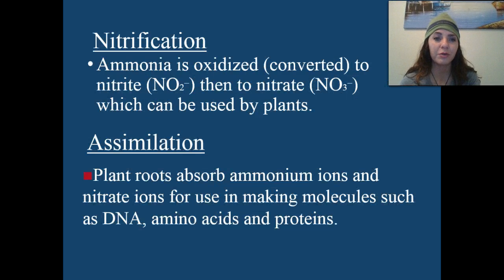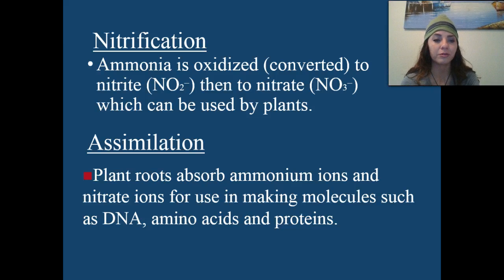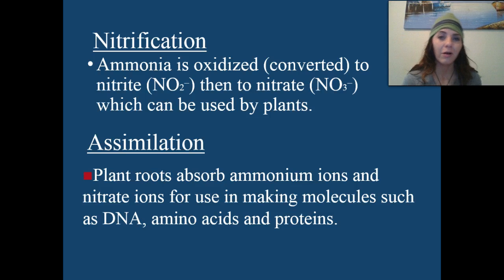Nitrification is when ammonia is oxidized or converted into nitrite and then into nitrate, which can be used by plants. Assimilation is when plant roots absorb those ammonium ions and nitrate ions for the use in making molecules such as DNA, amino acids, and proteins. Remember that amino acids are the building blocks for proteins.